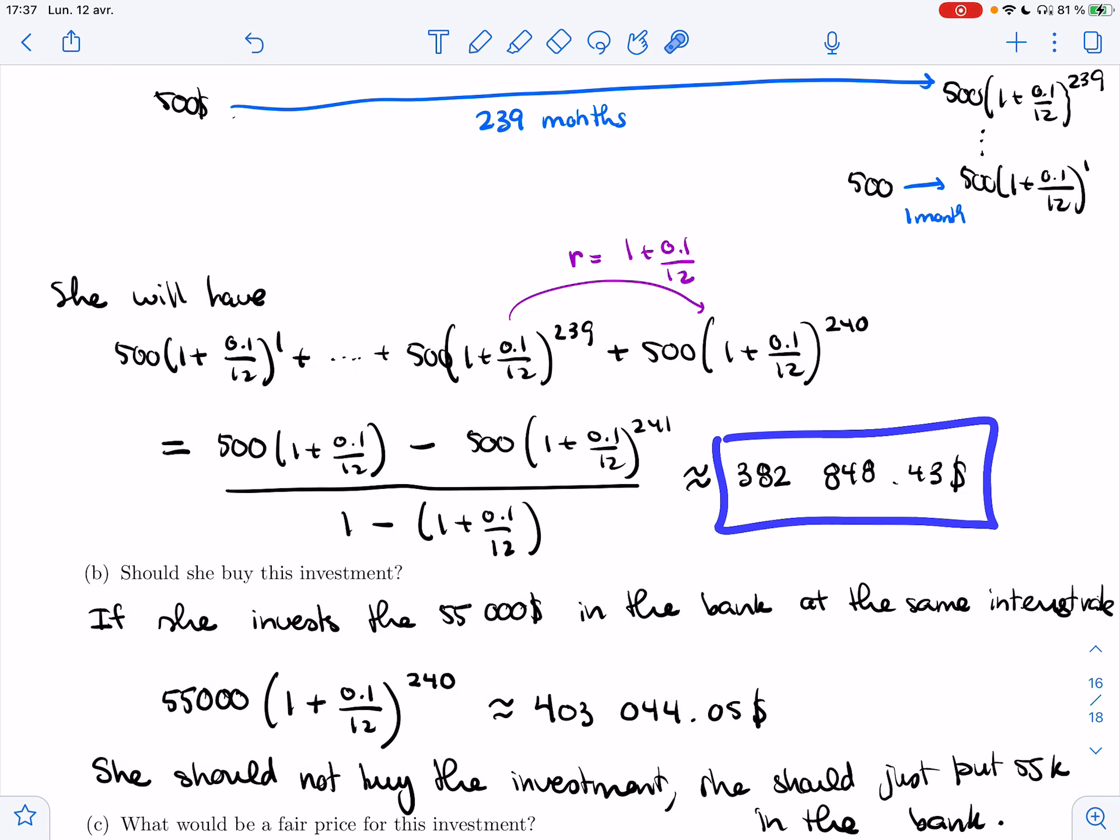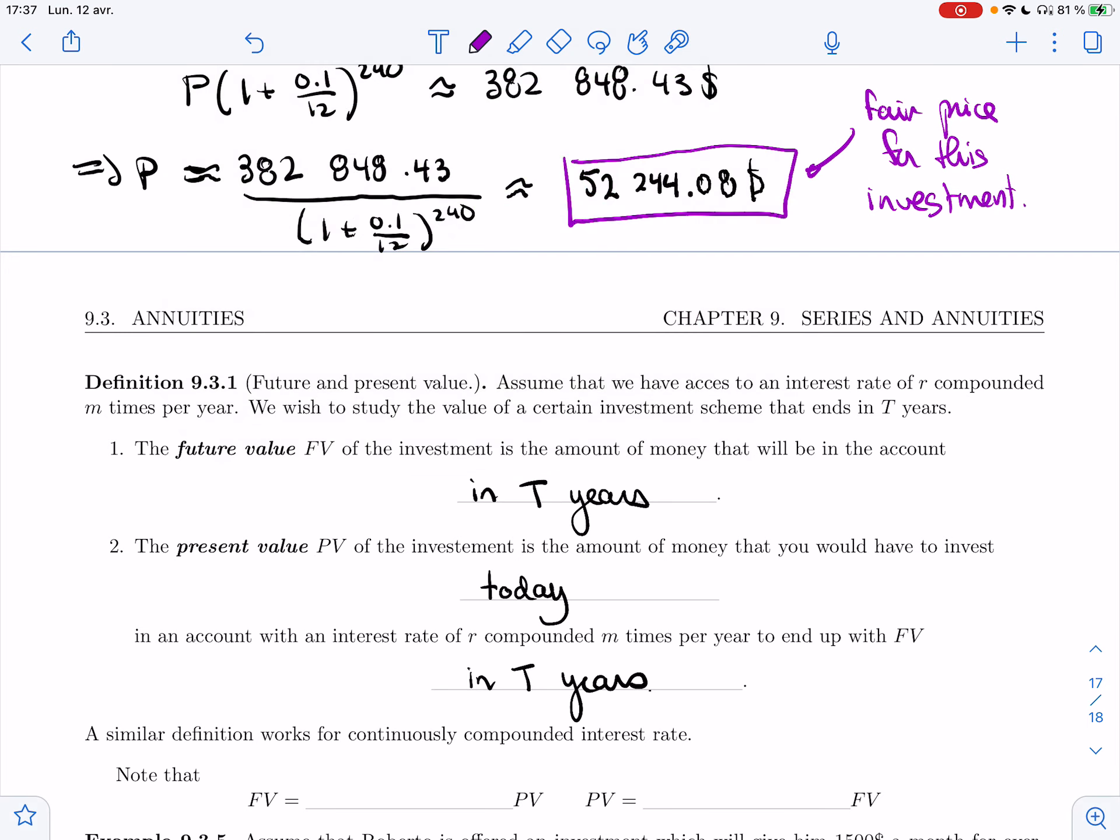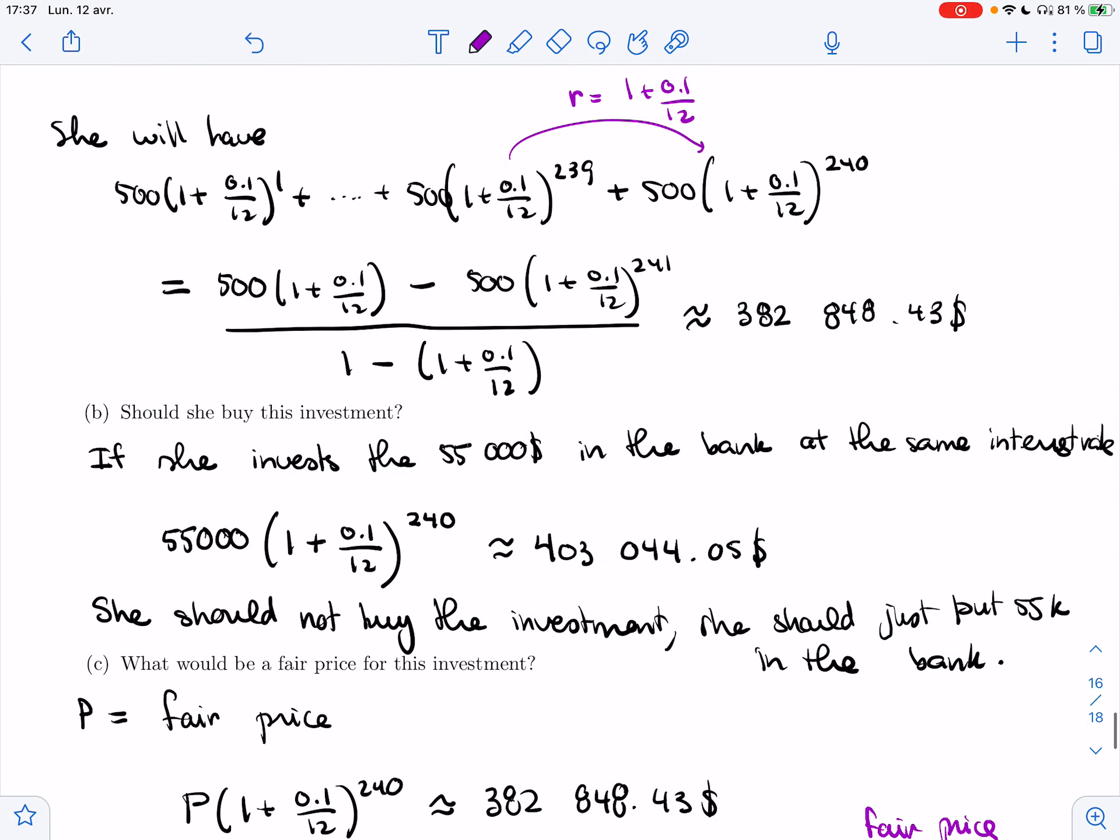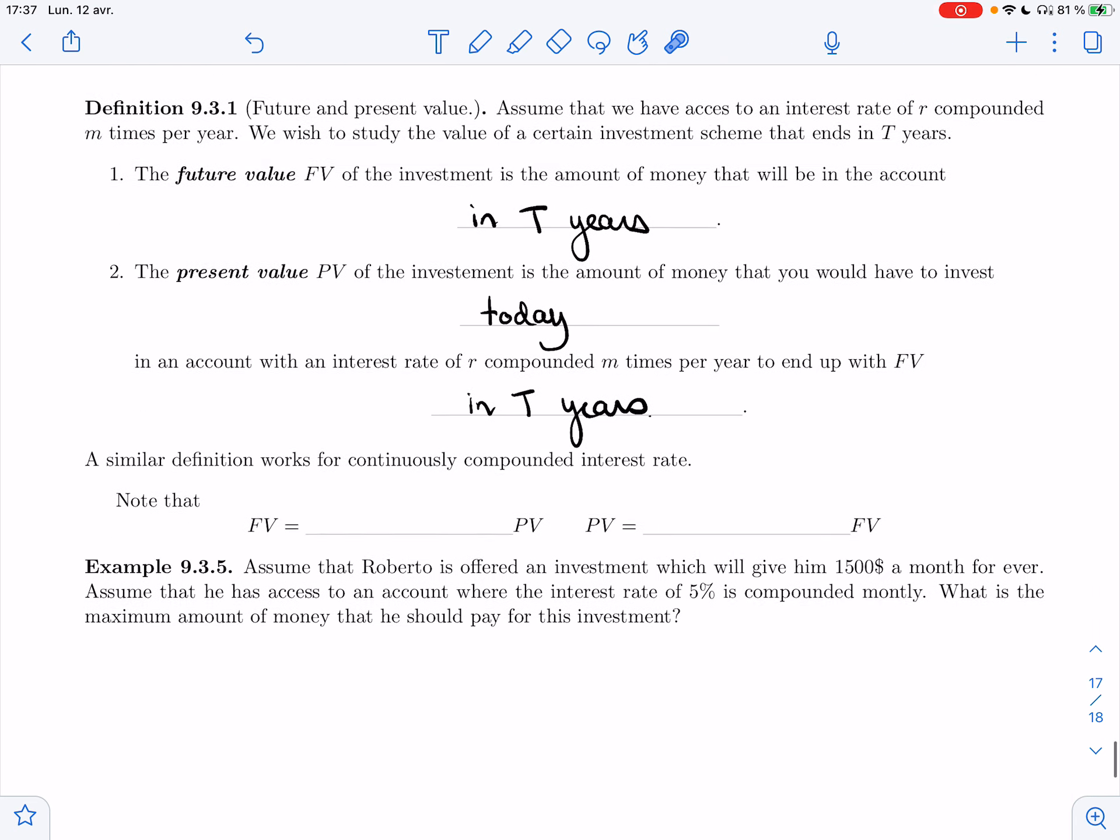The present value is a bit more abstract. So the present value of the investment is the amount of money that you would have to invest today in an account with an interest rate of R compounded M times a year to end up with FV in T years. So this is how much money you should start with to end up with the future value. So this here is present value, and this is future value. Future value lives here. Present value lives here.